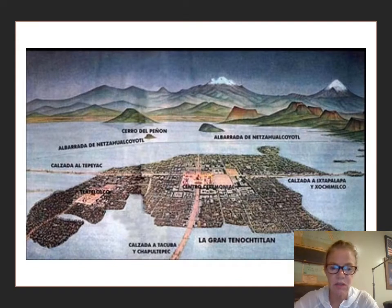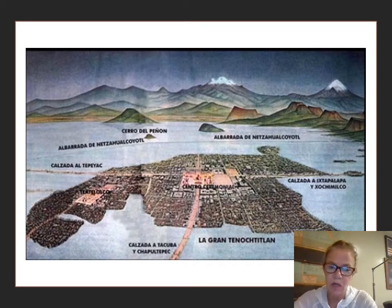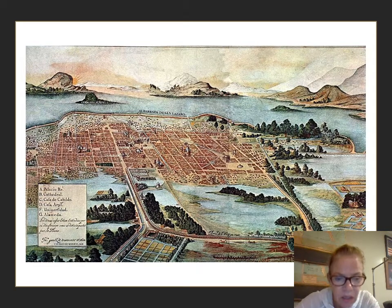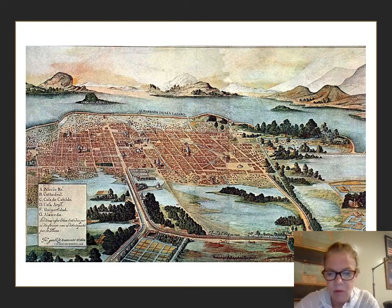This is a depiction of what Tenochtitlan looked like — the island out there, the mountains around it, the causeways going to it. Cortés came and surrounded it, and it took him a couple of years to conquer them. Here's a Spanish drawing showing the writing in Spanish, the cathedral, and all the different things they were going to have. They basically razed most of what the Aztecs had there, though some places still exist.